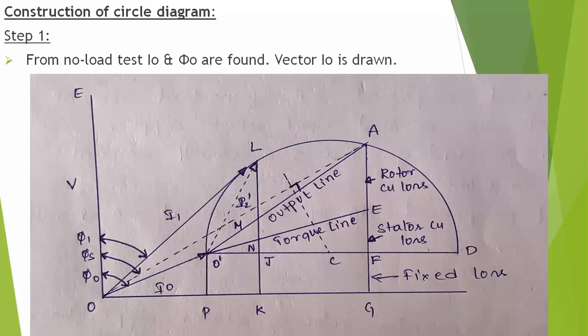For drawing the circle diagram, we have to collect the following data. First, the stator resistance test — we have to conduct this test for separating stator and rotor copper loss. Second, the two tests of induction motor: no load test and blocked rotor test. Blocked rotor test is also called the short circuit test.